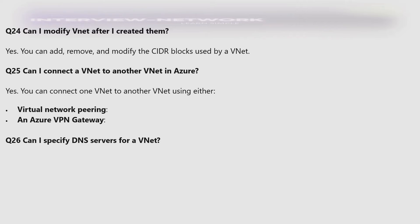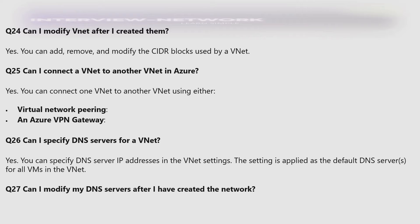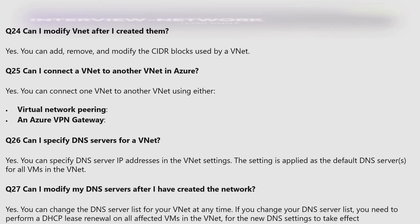Can I specify a DNS server for a VNet? Yes — you can specify DNS server IP addresses in the VNet settings, and the setting is applied as the default DNS server for all VMs in the VNet. Can I modify my DNS server after I have created the network? Yes — you can change the DNS server list at any time. If you change your DNS server list, you need to perform a DHCP lease renewal on all affected VMs in the VNet for the new DNS settings to take effect.